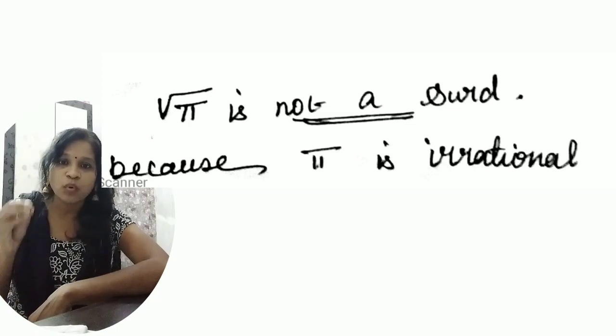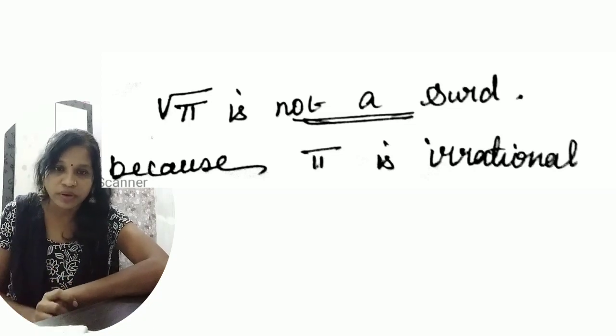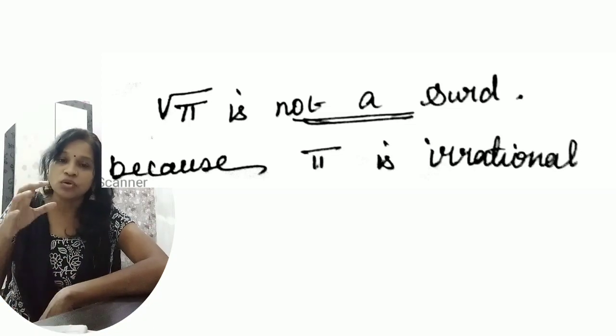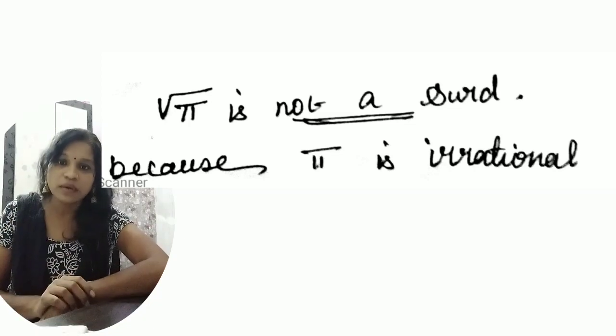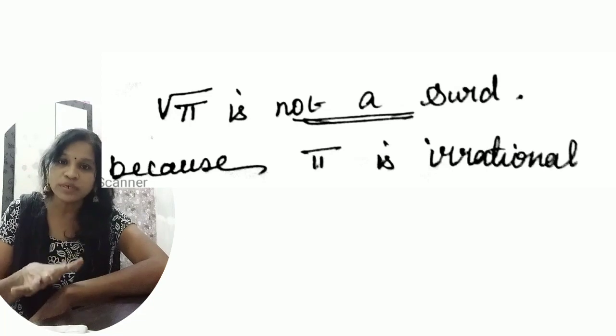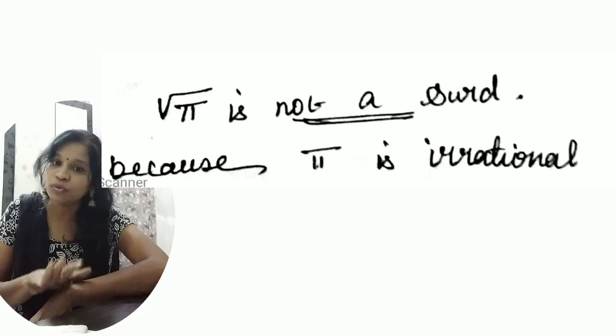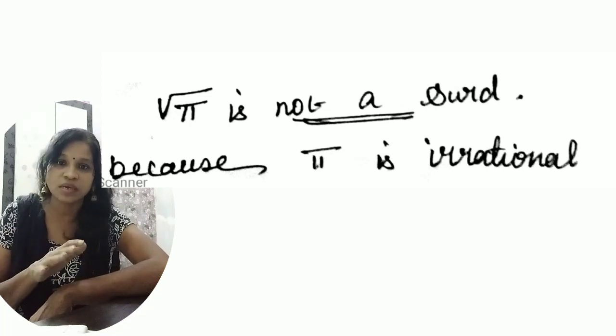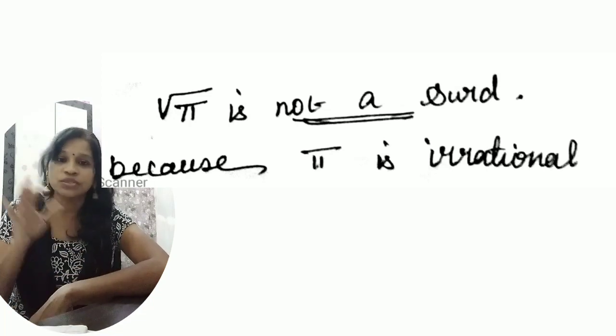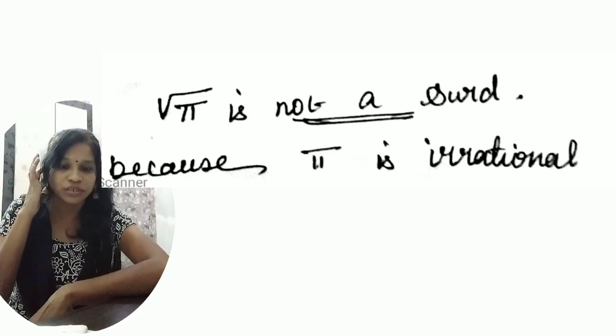So these points you have to remember: the whole root must be an irrational root for it to be called a surd; otherwise it is not a surd.